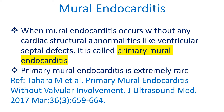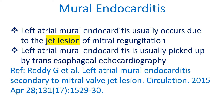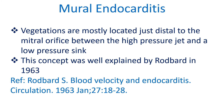Primary mural endocarditis is extremely rare. Left atrial mural endocarditis usually occurs due to the jet lesion of mitral regurgitation, and is usually picked up by transesophageal echocardiography. Vegetations are mostly located just distal to the mitral orifice, between the high pressure jet and a low pressure sink.